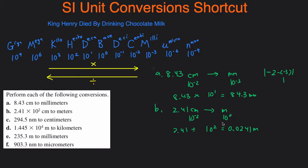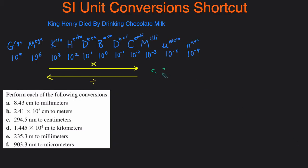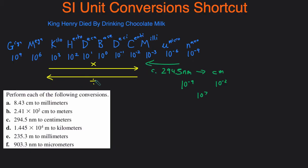In part C, we have 294.5 nanometers and we're converting it to centimeters. Nano is 10 to the negative 9 and centi is 10 to the negative 2. The absolute difference between negative 9 and negative 2 is 10 to the 7 — always take the positive absolute difference. We're going from nano to centi, which is moving to the left, so we divide: 294.5 divided by 10 to the 7 gives 2.945 times 10 to the negative 5 centimeters.